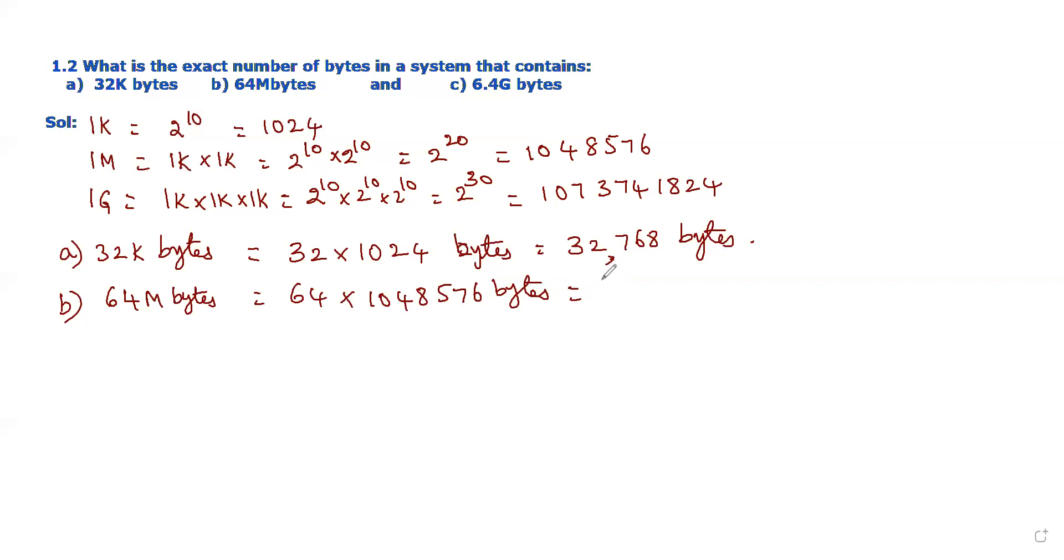Similarly, the third part is 6.4 gigabyte. Now we should calculate the value, then it becomes 6.4 into giga, which means 1073741824 bytes, which is equivalent to 6,871,947,674 bytes. This is the solution for this question. Thank you.